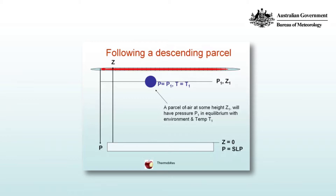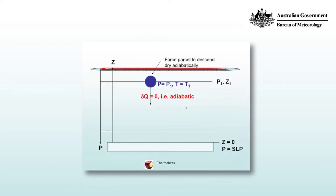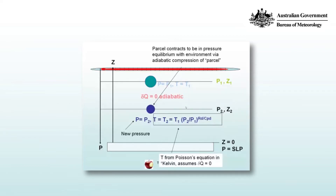Let's follow our parcel of air descending through the atmosphere. It starts at a pressure p1 at a height z1 above sea level pressure, or above the surface, where z is zero. The parcel of air has the pressure of its environment, p1, and the temperature of its environment, t1. So it's in equilibrium, pressure equilibrium and thermal equilibrium. Then we force the parcel to ascend dry adiabatically, so there are no phase changes and no exchange of heat between the parcel and its environment. And so we end up with a parcel of new pressure p2 and a new temperature t2.